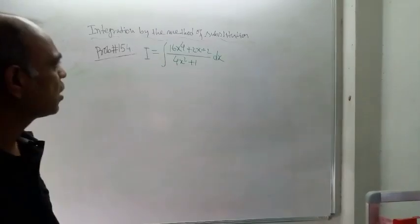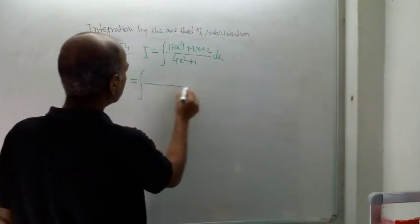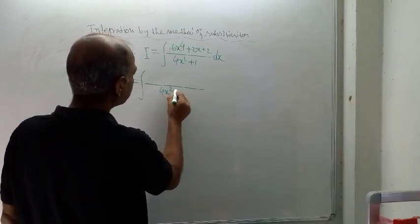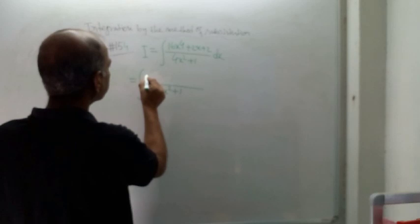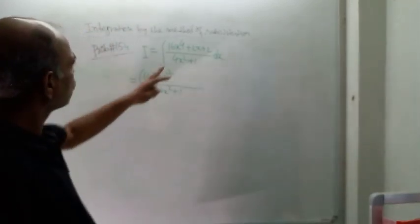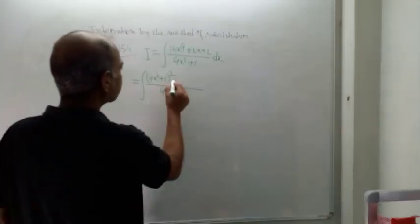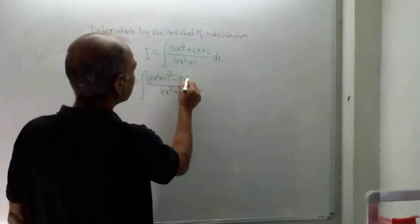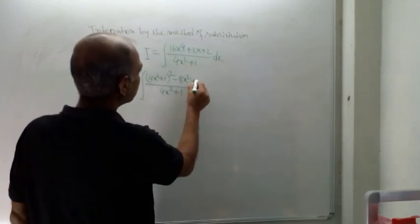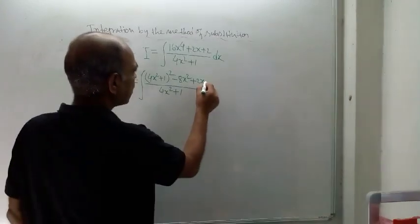The expression is an algebraic expression, so this can be written as the next line. First write the denominator. This term can be written as (4x² + 1) whole square, so you are getting the first term 16x⁴. Then 8x² is there — that is the extra term. So 8x², then plus 2x is there, and here I have written plus 1. Here plus 2 is there, so plus 1 will appear.